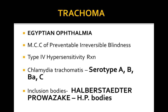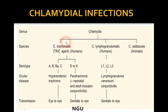Now we go for the second topic — trachoma. Trachoma is a very important topic in ophthalmology and SPM. It is also called Egyptian ophthalmia. It is the most common cause of preventable irreversible blindness. There is a type 4 hypersensitivity reaction because of chlamydial antigens — compare this with type 1 hypersensitivity in spring catarh. The causative organism is Chlamydia trachomatis, serotypes A, B, Ba, and C. The inclusion bodies of trachoma are called HP bodies, or Halberstaedter-Prowazek bodies — an important MCQ.